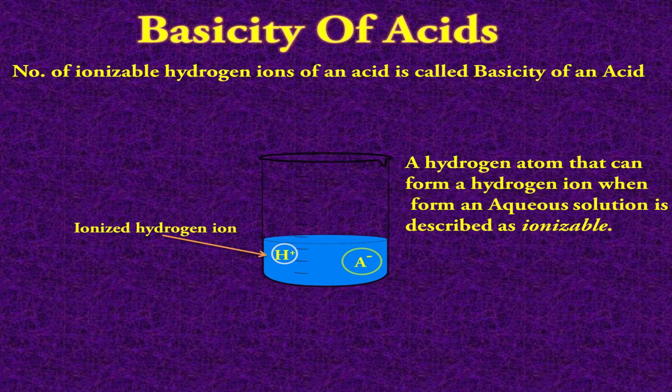Any hydrogen atom that can form a hydrogen ion when dissolved in water to form an aqueous solution is described as ionizable. So the basicity of an acid is actually the number of replaceable, removable, or ionizable hydrogen ions present in any acid.